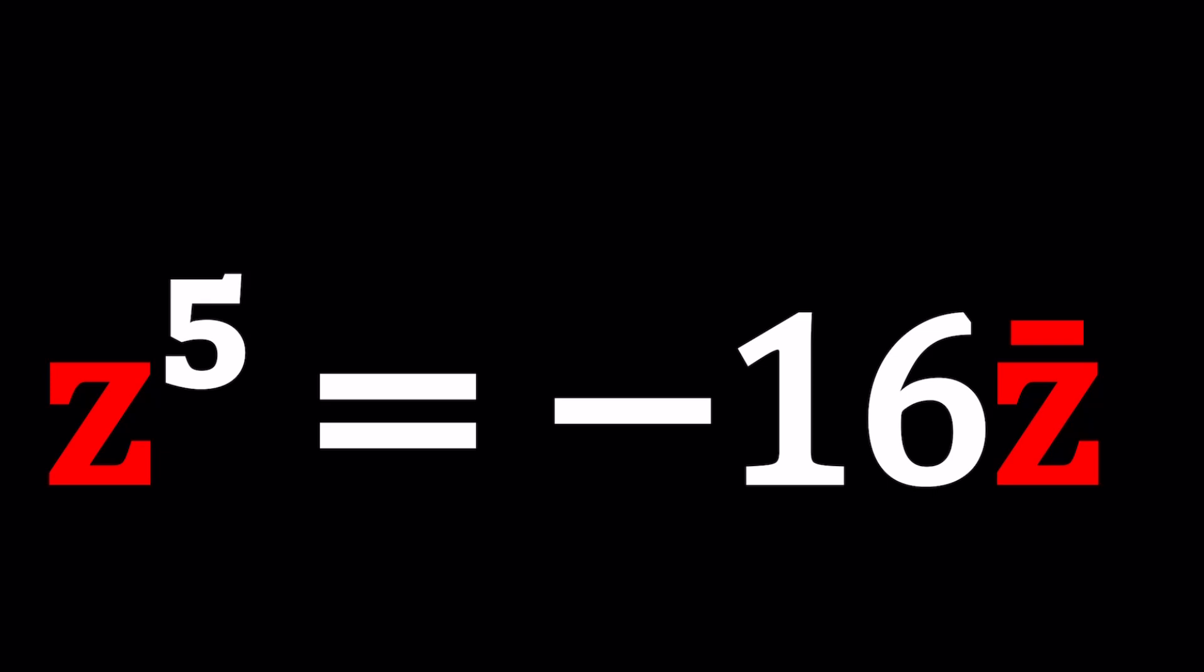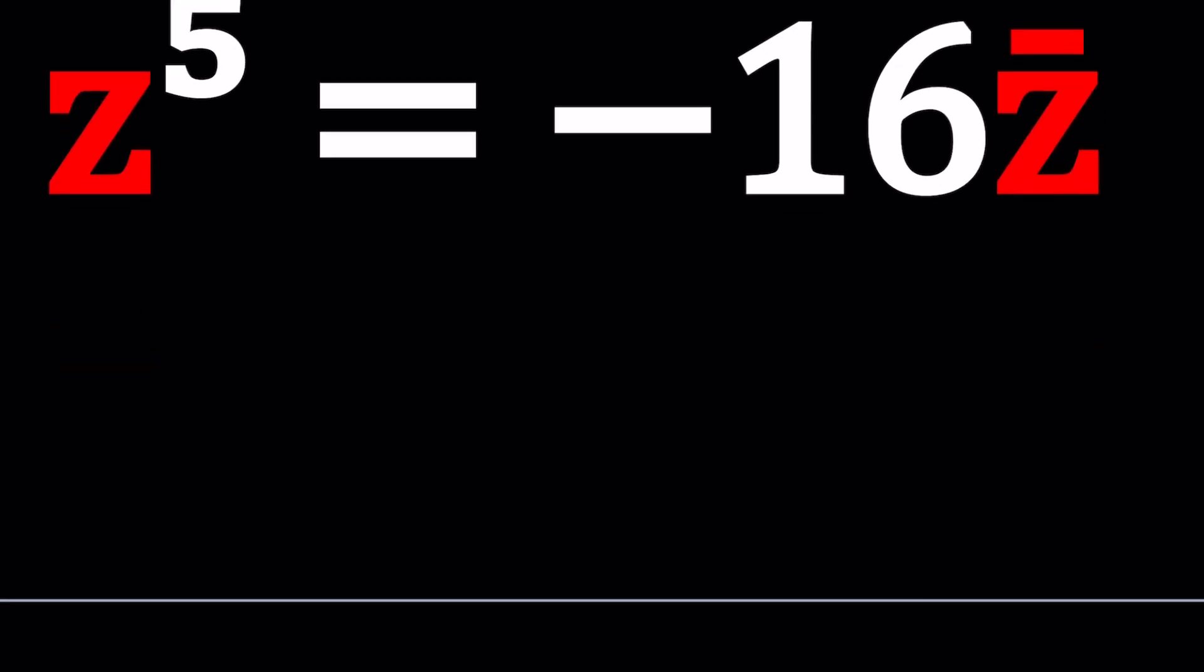Z bar is the complex conjugate of Z which is defined as if Z equals A plus B I, which is by the way the name of this channel, then Z bar is just going to be A minus B I. So it's the unique complex number which gives us a real answer when multiplied by or added to Z. Make sense? That's how it's defined but you can also use this simple definition.